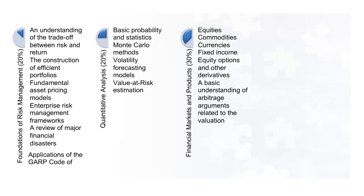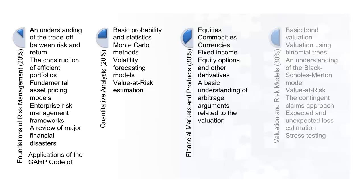A basic understanding of arbitrage arguments related to the valuation of financial products is also tested. The Valuation and Risk Models area covers basic bond valuation, valuation using binomial trees, and an understanding of the Black-Scholes-Merton model. Risk models and techniques such as Value at Risk, the contingent claims approach to measuring risk, expected and unexpected loss estimation, and stress testing are also covered.